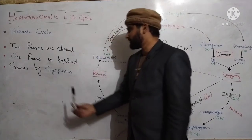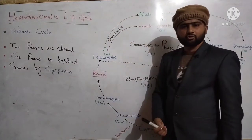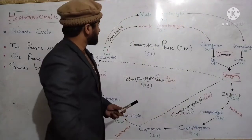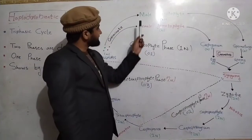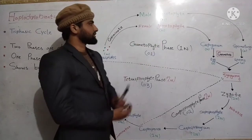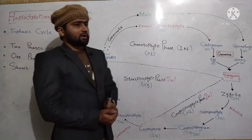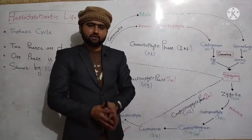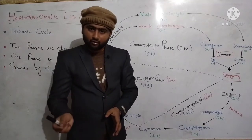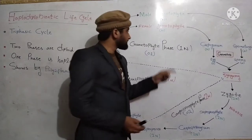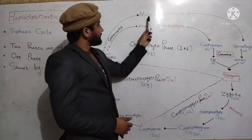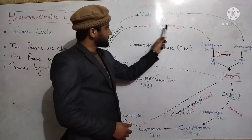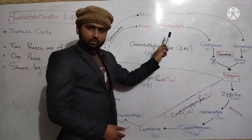Polysiphonia is a member of algae. As we discussed in the last video lecture, gametophyte is always haploid and sporophyte is always diploid. So male gametophyte is haploid and female gametophyte is haploid as well.